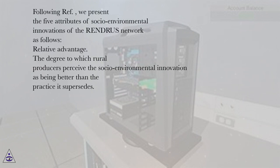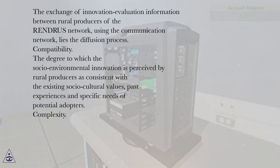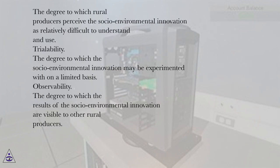The five attributes of socio-environmental innovations in the Rindris network are as follows. Relative advantage: the degree to which rural producers perceive the innovation as better than the practice it supersedes, with information exchange lying at the heart of the diffusion process. Compatibility: the degree to which the innovation is perceived as consistent with existing socio-cultural values, past experiences, and specific needs of potential adopters. Complexity: the degree to which rural producers perceive the innovation as relatively difficult to understand and use. Trialability: the degree to which the innovation may be experimented with on a limited basis. Observability: the degree to which the results of the innovation are visible to other rural producers.